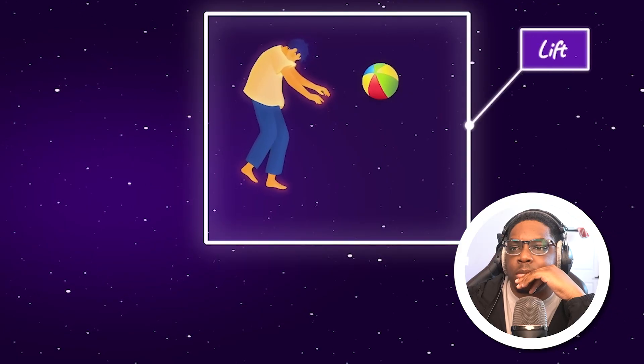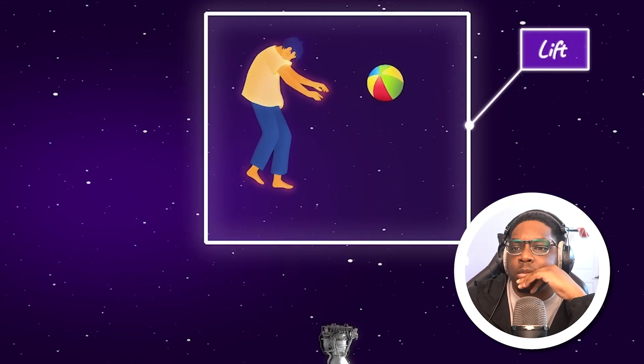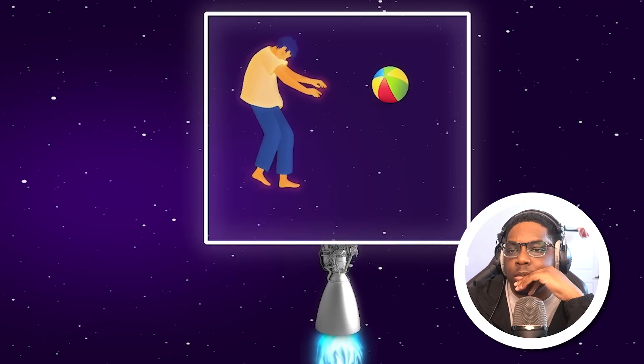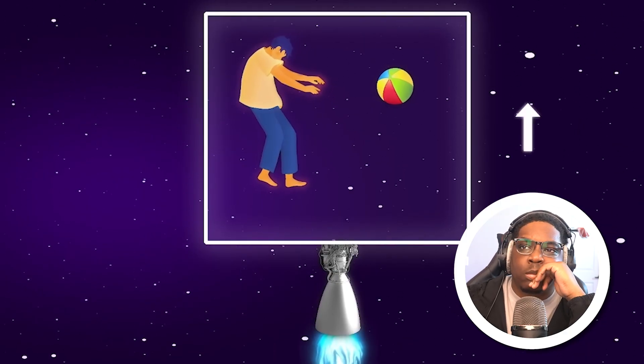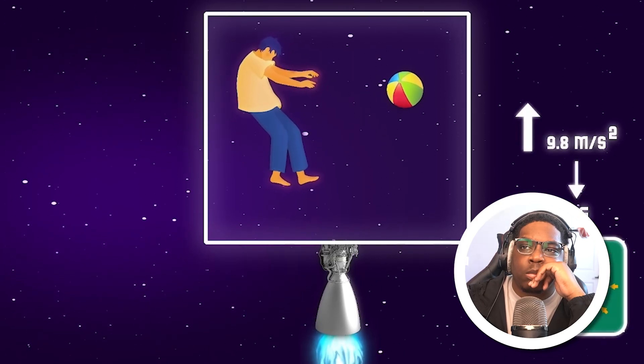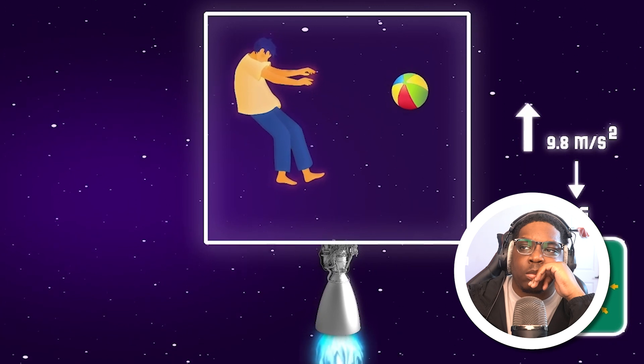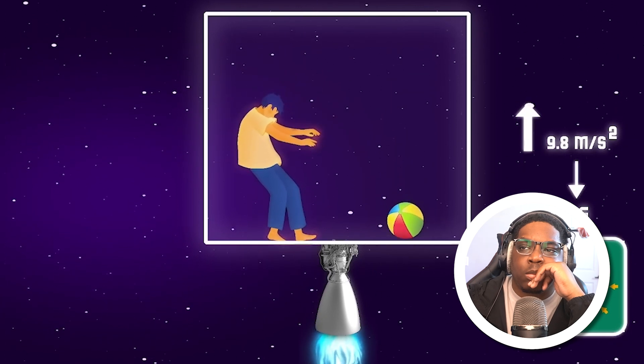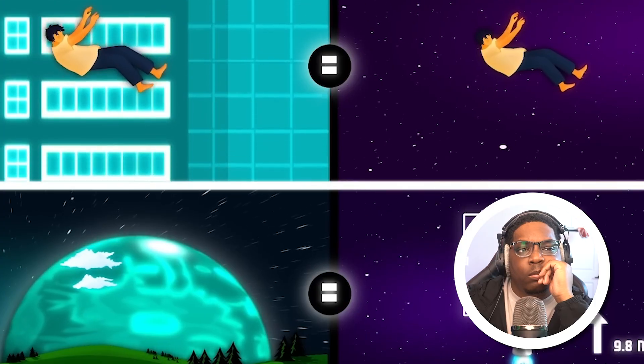Now I'm floating in space inside a lift with a ball also floating beside me. A motor engine accelerates the lift upwards at 9.8 meters per second squared — that's 1g, Earth's gravitational force. The ball falls to the lift floor and I am pushed toward the bottom. I feel the same amount of gravity as on Earth. I don't feel any difference whether in space or on Earth — free fall on Earth equals free movement in space.